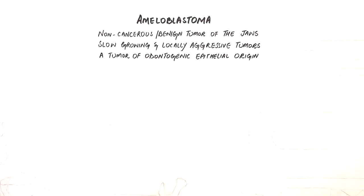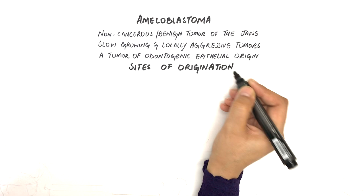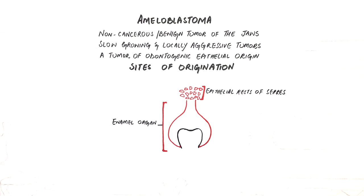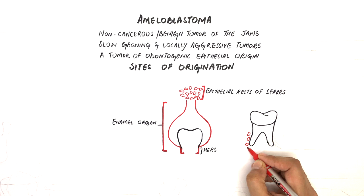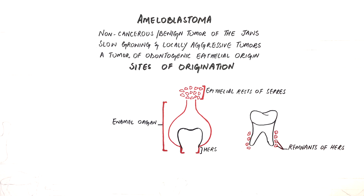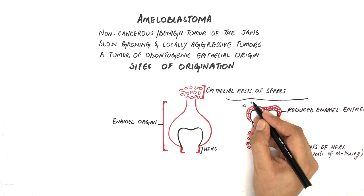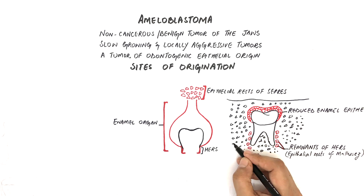The possible odontogenic tissues that are thought to give rise to an ameloblastoma are as follows: the enamel organ of the developing tooth germ; remnants of dental lamina, also called epithelial rests of Serres; remnants of Hertwig's epithelial root sheath, which are left after the root of a tooth is completely formed and are known as epithelial rests of Malassez; the reduced enamel epithelium, which is the epithelium that covers and protects a tooth crown after the enamel is formed and until the tooth erupts into the oral cavity.